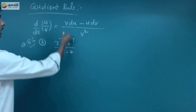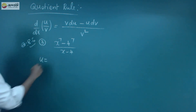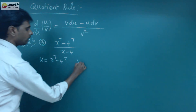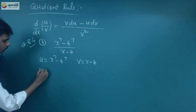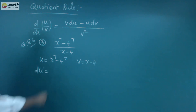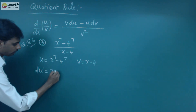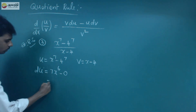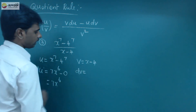Using the quotient rule: v du minus u dv, all over v squared. Here, u equals x power 7 minus 4 power 7, and v equals x minus 4. So u-dash is the differentiation of u: by the power rule x power n gives n times x power n minus 1, so du equals 7x power 6. Since 4 power 7 is a constant, its derivative is zero. And dv equals 1.